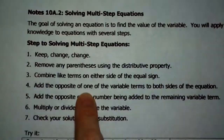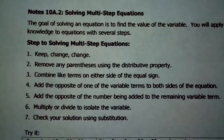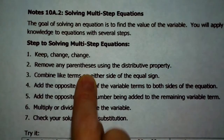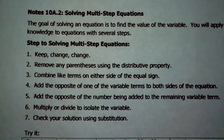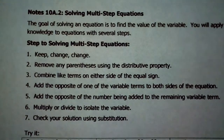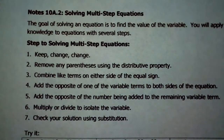Basically the same thing is going on. Number one: keep change change. Number two: if you see parentheses, get rid of them using the distributive property. If you see parentheses and there's a number multiplied by those parentheses right next to it, you take that number and distribute it to everything inside. At that point, look and see if you have any like terms that you can combine on either side of the equal sign. You can't combine like terms across the equal sign unless you're doing the opposite, but you can combine like terms on the left side together, and on the right side together. At that point, you'll have an equation that looks familiar — maybe a variable on both sides, maybe a two-step, maybe a one-step — and you solve those the way you've been doing it this whole chapter.